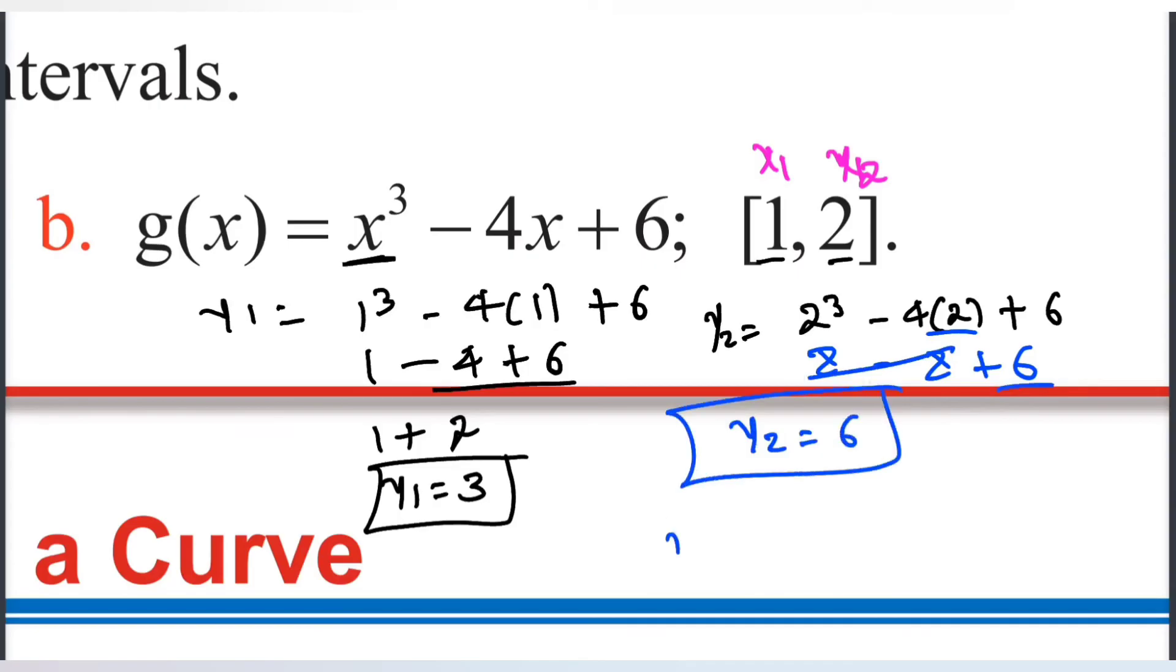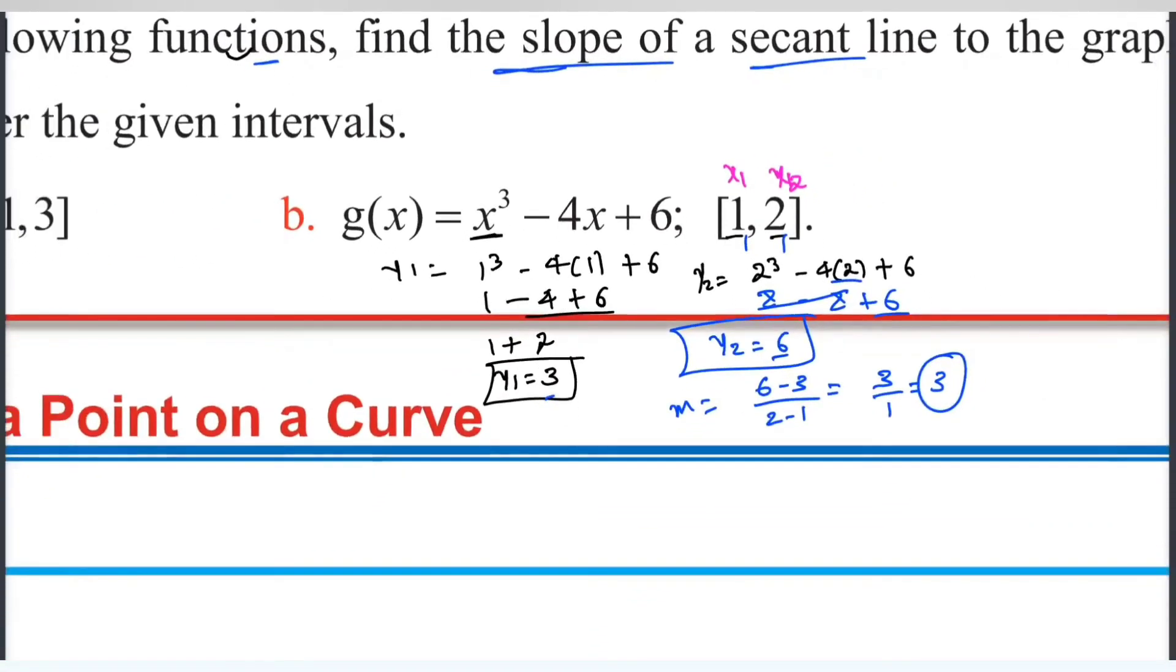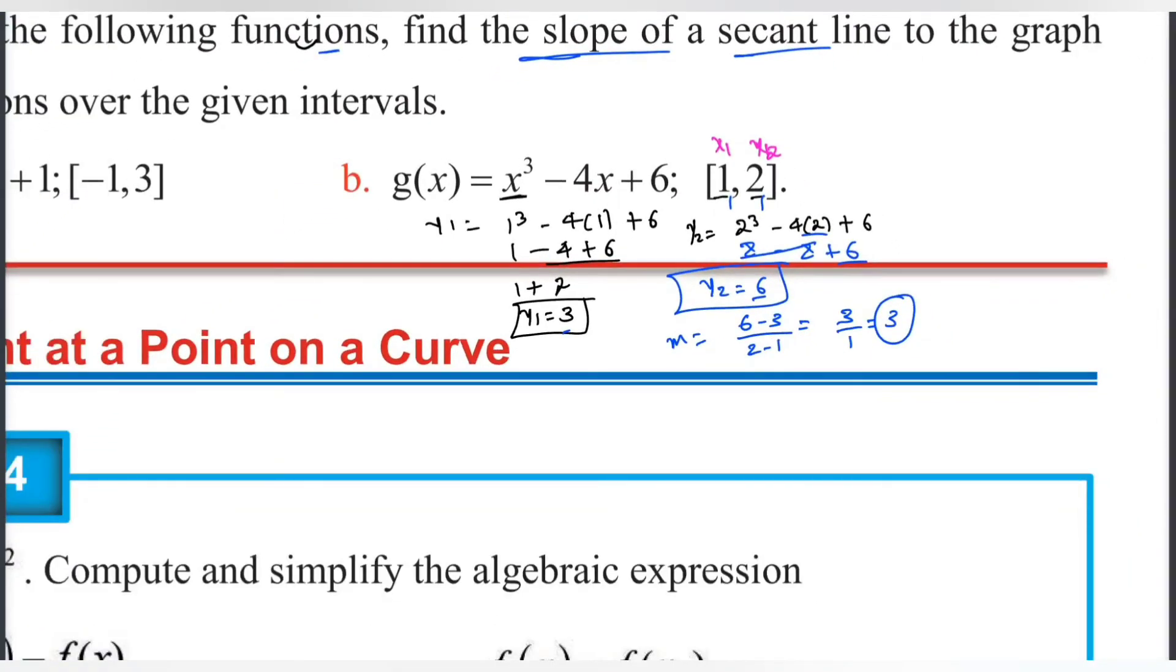So the slope: change in y, y2 minus y1, 6 minus 3 over x2 minus x1, 2 minus 1. 6 minus 3 equals 3 over 2 minus 1 equals 1. 3 over 1 equals 3. The slope is 3.